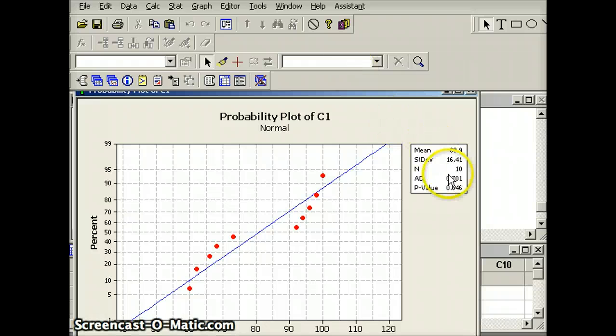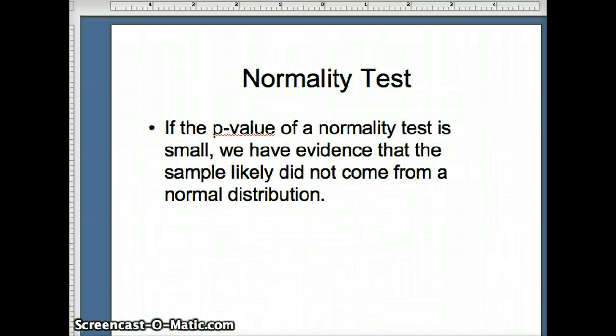And if we look at our results, it gives us a p-value. The p-value is 0.046. That's a small p-value. We're going to usually define small as less than 0.05. So this is more evidence that the underlying data set is not normal. So it's not fair to use a t-interval. Instead, we're going to use a technique called resampling.